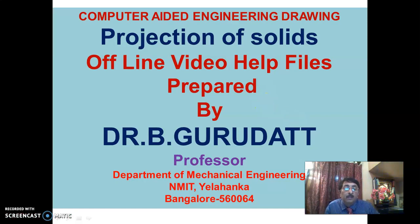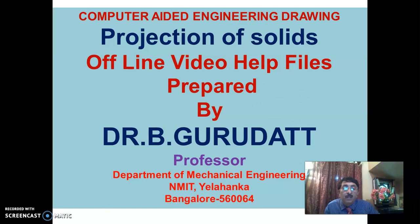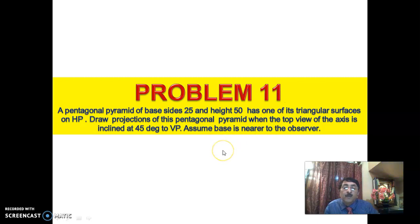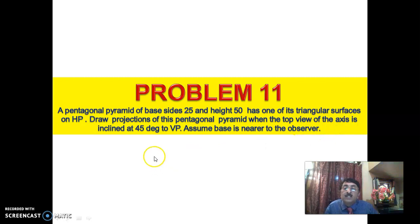Hello everyone, welcome to the new session on projection of solids — projection of pyramids. This is session 5 on projection of pyramids. In problem 11, the problem says a pentagonal pyramid of base size 25 and height 50 has one of its triangular surfaces on HP. You have to draw projections when the top of the axis is inclined at 45 degrees to VP, and assume base nearer to the observer.